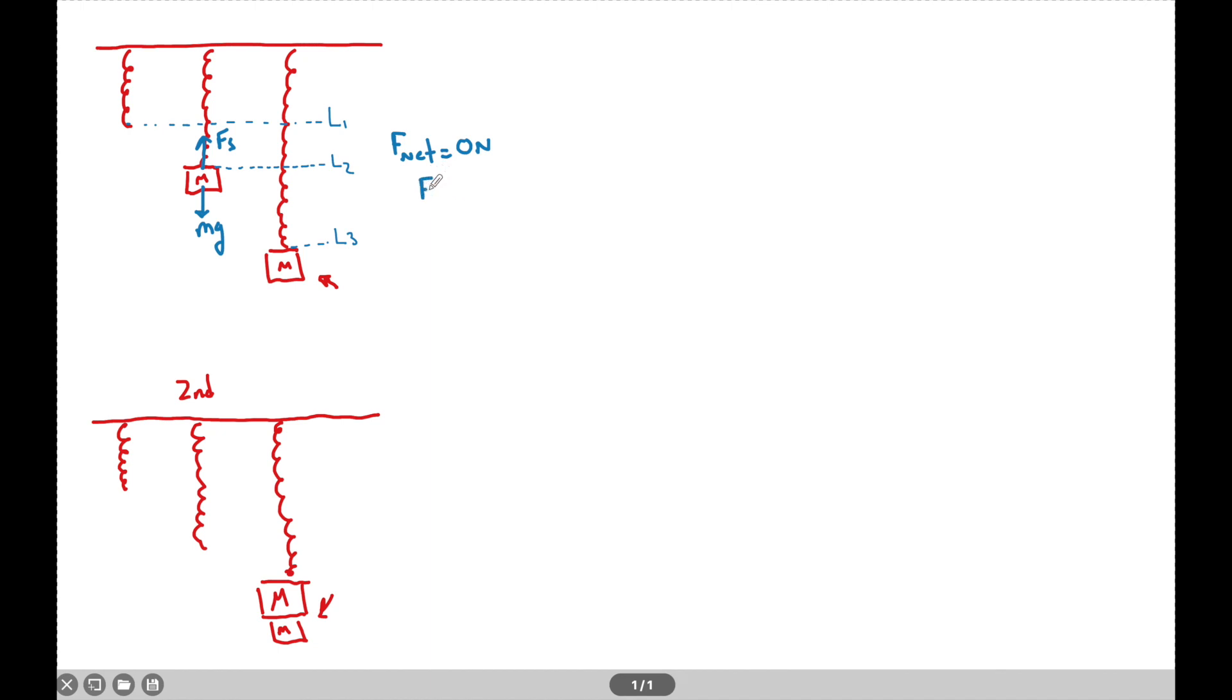Now these are going to be equal and opposite. So if I said the Fnet was equal to minus FS minus MG, we can now say that FS is going to be equal to MG. So if I call this first initial drop K0, right? That's how much it dropped when the mass was added. I can now make an expression that says KX0 equals MG. This is at L2.